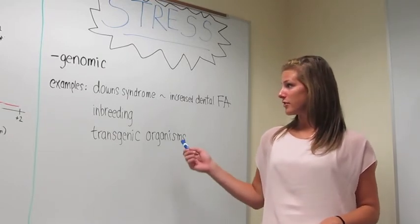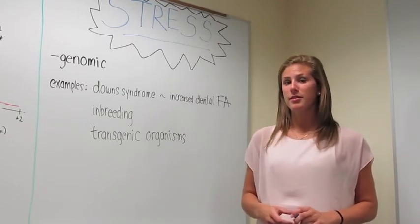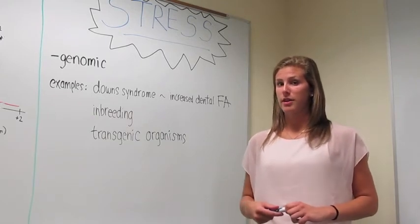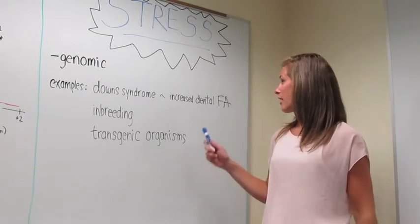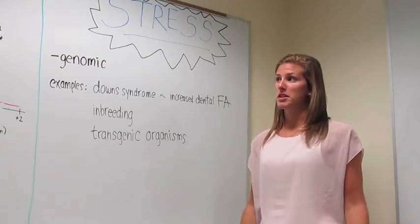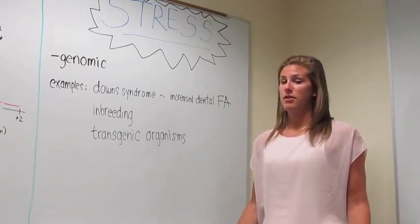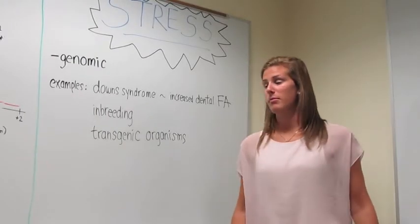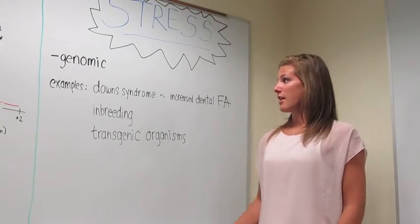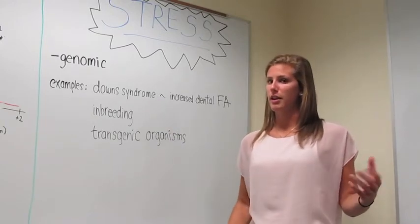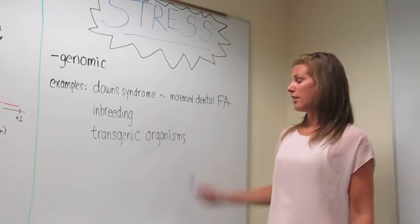We have three examples of genomic stress here. First, people with Down syndrome, characterized by three 21st chromosomes, typically are found to have increased dental FA. This is simply because having three 21st chromosomes is a major assault to the organism's genome, and this type of syndrome results in a totally unrelated, or seemingly unrelated, effect.